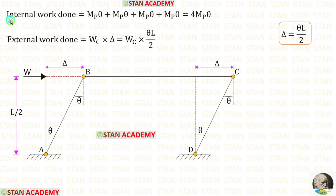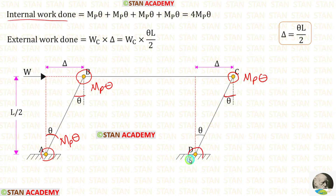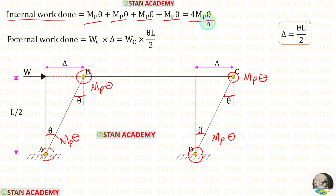Now let us find the internal work done for the sway mechanism. At point A we have a plastic hinge — multiply MB by theta. At point B we have a plastic hinge — multiply MB by theta. At point C we have a plastic hinge — multiply MB by theta. At point D we have a plastic hinge — multiply MB by theta. Adding all of them, the internal work done equals 4 MB theta.